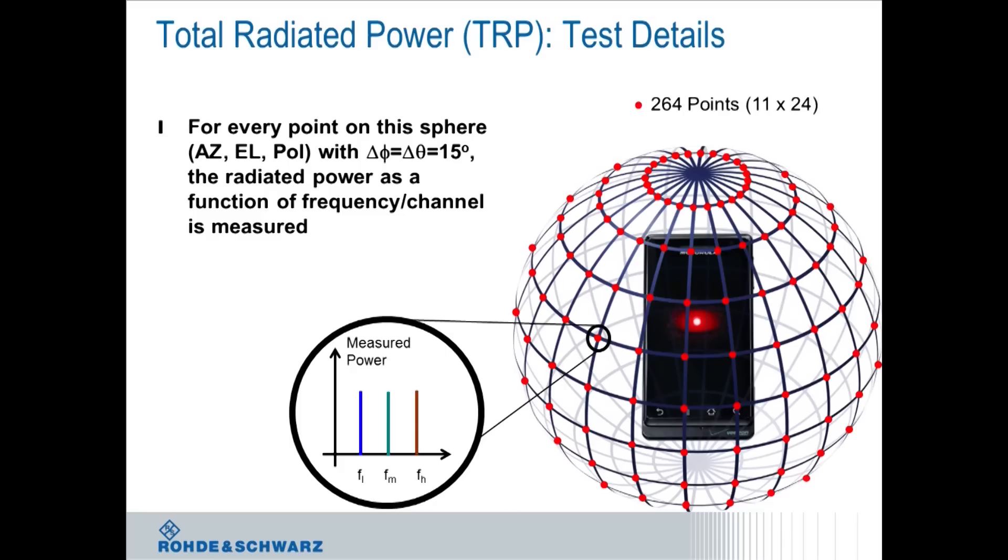That's slightly different when you look at the TRP approach. Here you're looking at 264 points that you may need to measure transmit power around the device on a test in 3D. At each one of these points, you're looking at a transmit power measurement. And that is very, very fast.